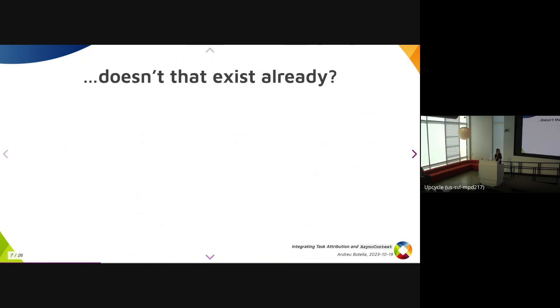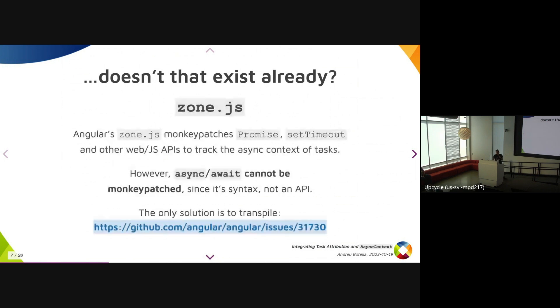And you might think there are things that do that already, right? So there's Node.js. The thing that it does is it monkey patches promise, setTimeout, and other web and JavaScript APIs to track the async context of tasks. The thing with that is you can't monkey patch async await because it's syntax. And you might think that you might be able to work around that by monkey patching promises, but if you do await 42, it will do promise.resolve(42), but it will not use the global promise. It will use the actual built-in. So you can't monkey patch that. The only solution to that is to transpile anything with async await.